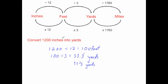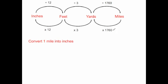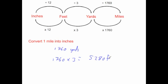Just remember that 0.3 recurring is the same as a third. So all we've done there is converted from inches into feet and then into yards. Next, convert 1 mile into inches. We need to go from miles into yards, then yards into feet, then feet into inches. So 1 mile times 1,760 gives 1,760 yards. Then times by 3 gives 5,280 feet. Then times by 12 gives 63,360 inches. So a mile is the same as 63,360 inches.